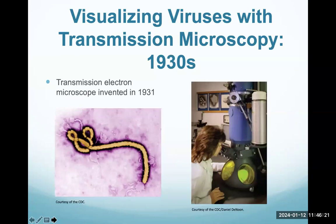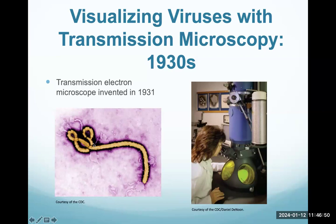When we started to look at viruses, we actually needed a special type of microscope to see them because they are so small. These microscopes were developed in the 1930s and are called electron microscopes. It wasn't until we had these that we could actually visualize viruses, because our normal light microscopes could not resolve the tiny size of a virus. This image is showing a virus — I believe this is Ebola, which is a helical virus — and we'll talk about that more in the future.